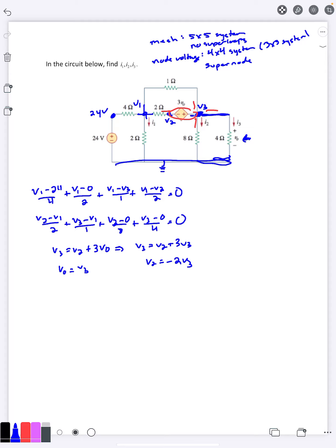So I can go ahead and plug that in here but let me just get rid of the fractions first. Multiply this by 4, multiply this by 8. So 4 would be v1 minus 24 plus 2v1 plus 4v1 minus 4v3 plus 2v1 minus 2v2 is 0. Combining those together, 9v1 minus 2v2 minus 4v3 is 24.